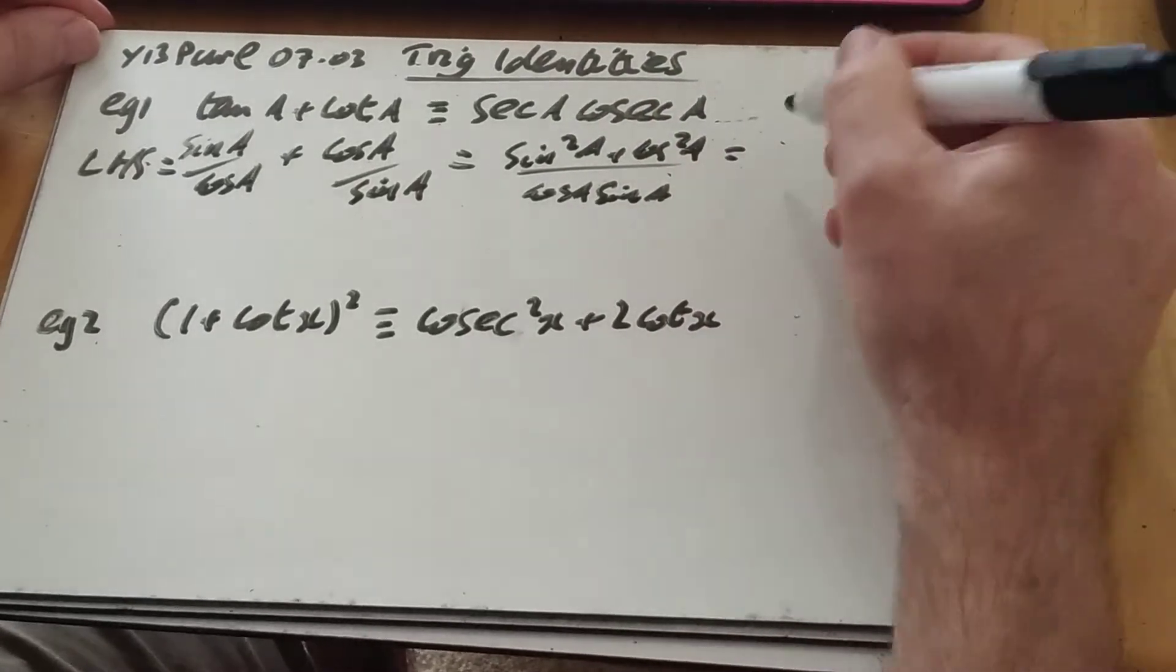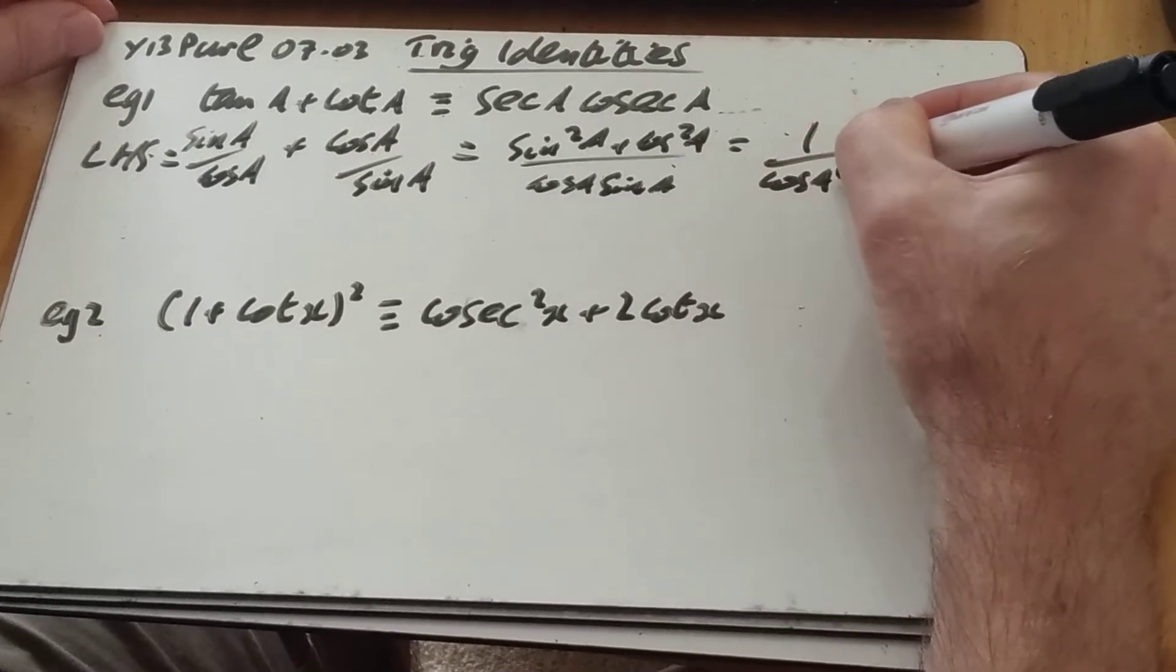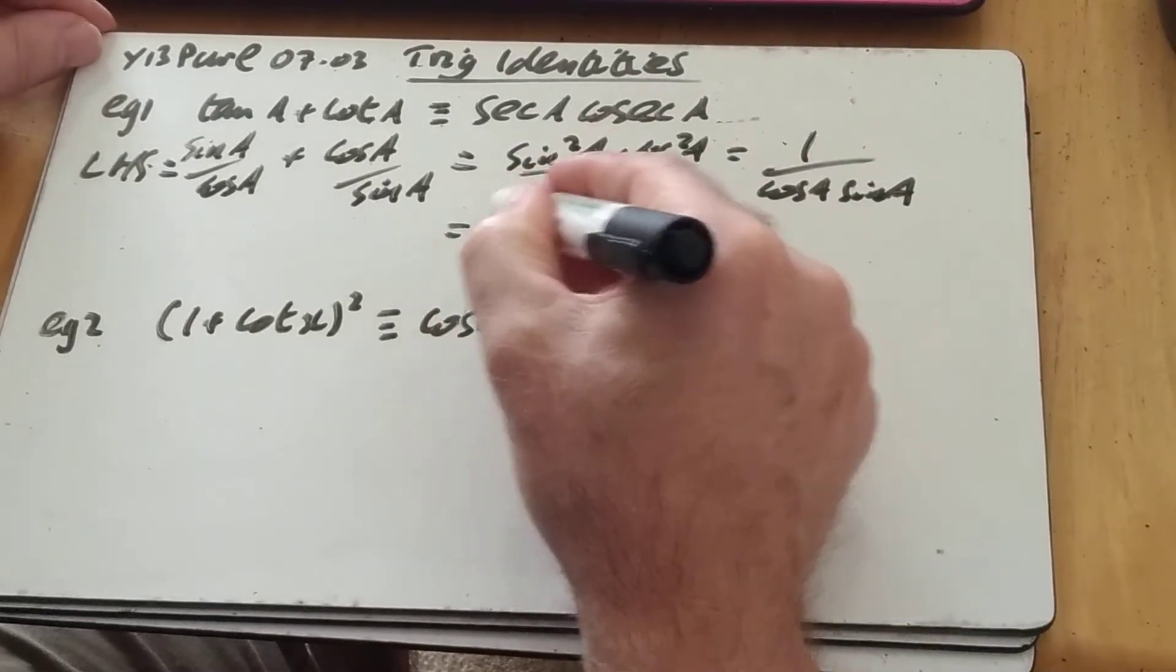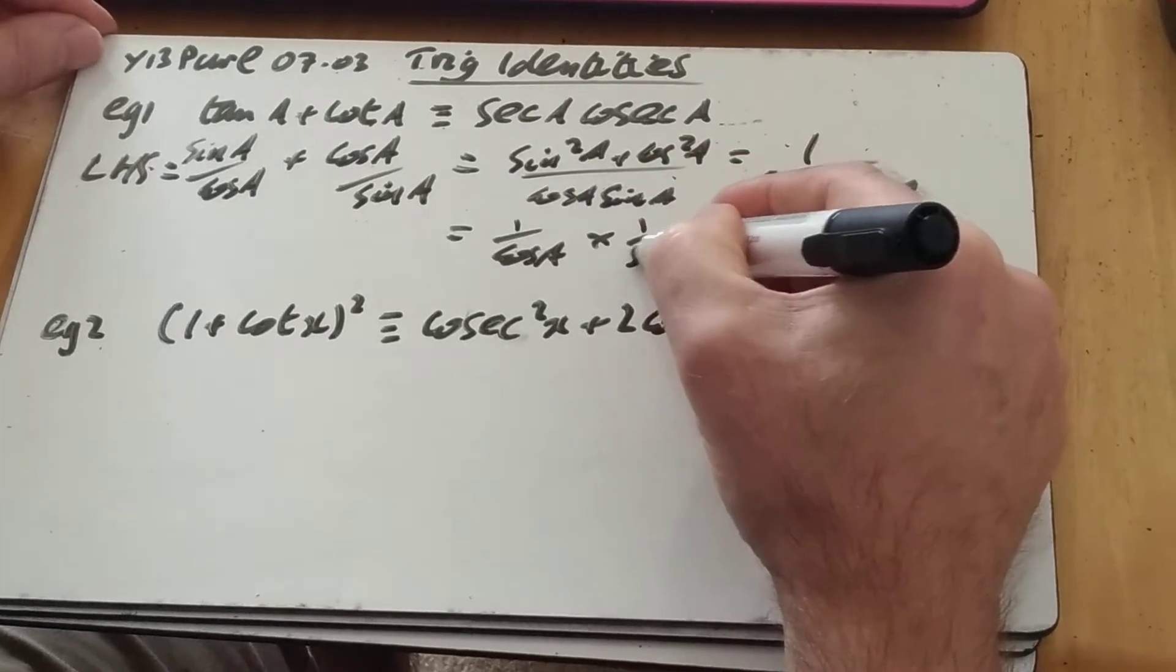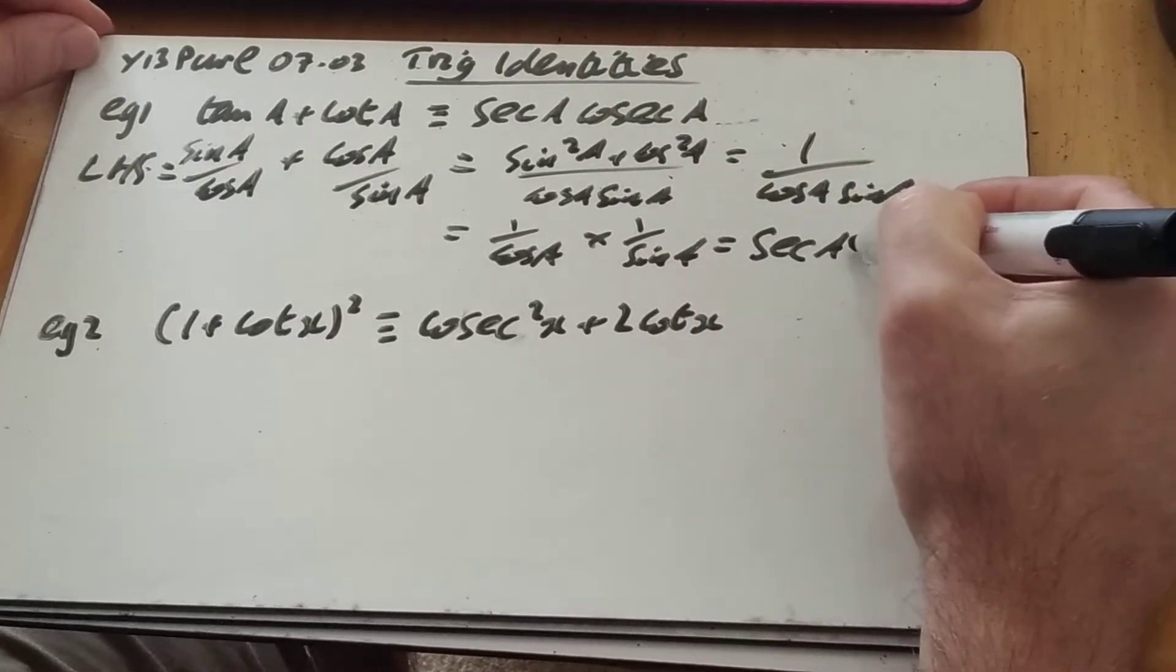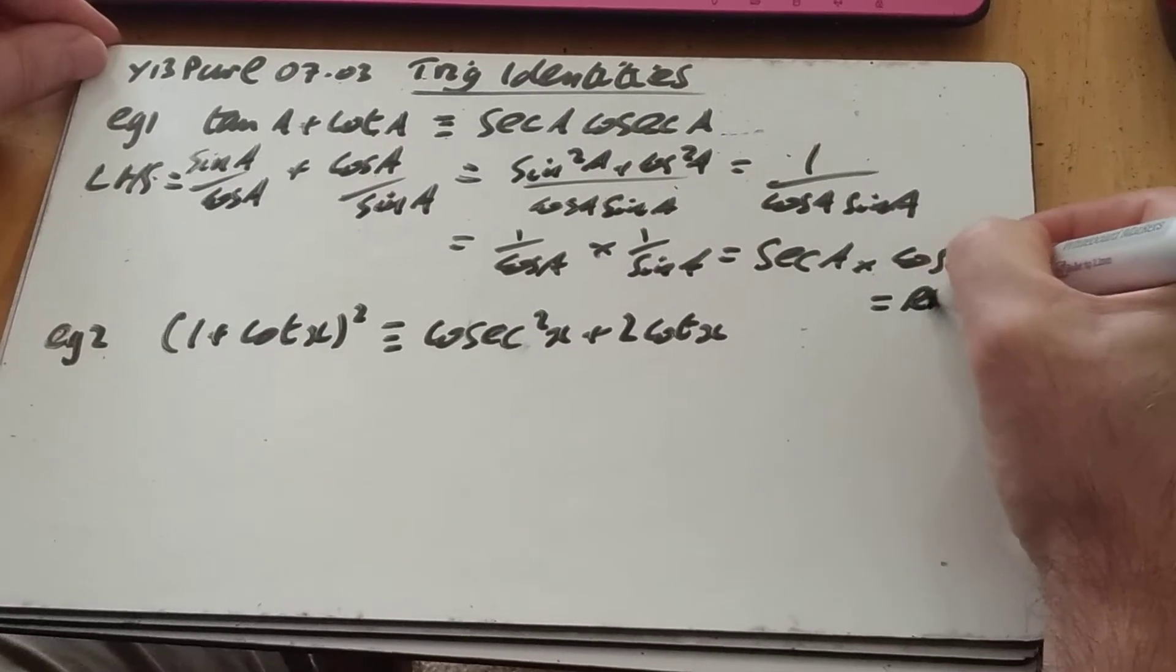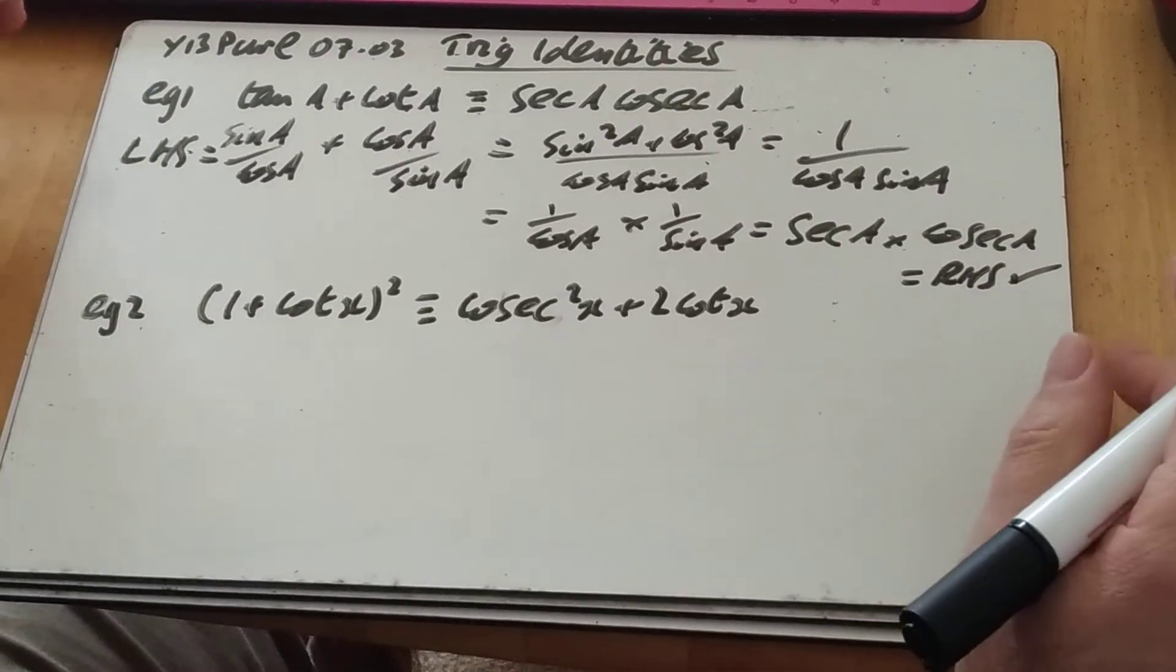Well, sine squared plus cos squared, Pythagorean identity, as predicted, is 1 over cos A sine A. We're almost there because I can rewrite that as 1 over cos A times 1 over sine A and that's sec times cosec, which is on the right-hand side. I'll do that or a little tick or whatever's like that. Okay, nice and straightforward.